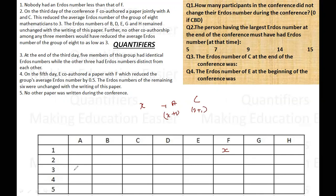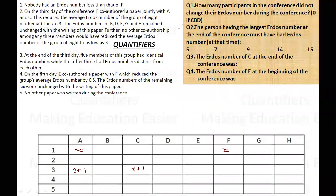On the third day, A became x plus one and C became x plus one. We are told A was the only person having infinity, so A was infinity and now becomes x plus one. The Erdős numbers of B, D, E, G, H remained unchanged with the writing of this paper.